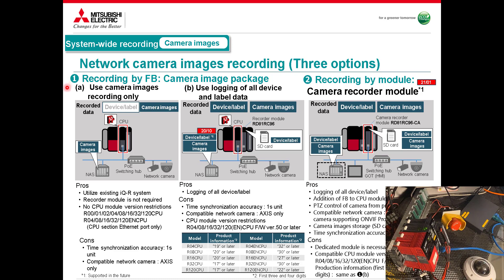The piece we're going to look at is scenario 1a. We also have 1b and option 2. This scenario is network camera recording using an Axis camera. We have a standard CPU connected via the front port to a hub and switch going out to the Axis camera. That camera can store data internally on an SD card or via a network share — in this case, a shared folder on our PC. The CPU sets the camera's time and tells the camera when to record images and push them to the shared server. The CPU also does logging, and the video file and logging file will be synced.